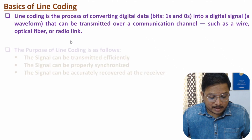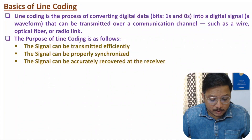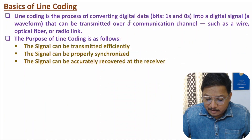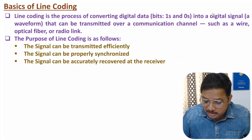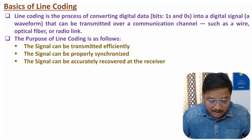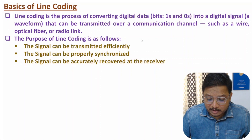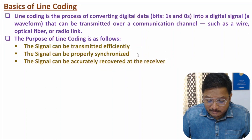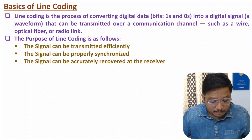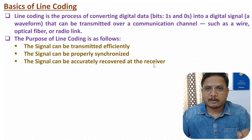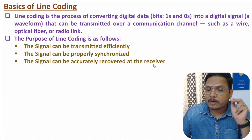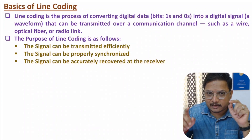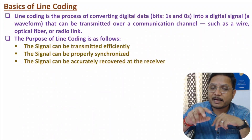The purpose of line coding: first, the signal can be transmitted effectively over the communication channel. Second, the signal can be properly synchronized at the receiver side. Third, the signal can be accurately recovered at the receiver side. So we convert digital data into digital signal — a waveform — that we transmit over the channel.